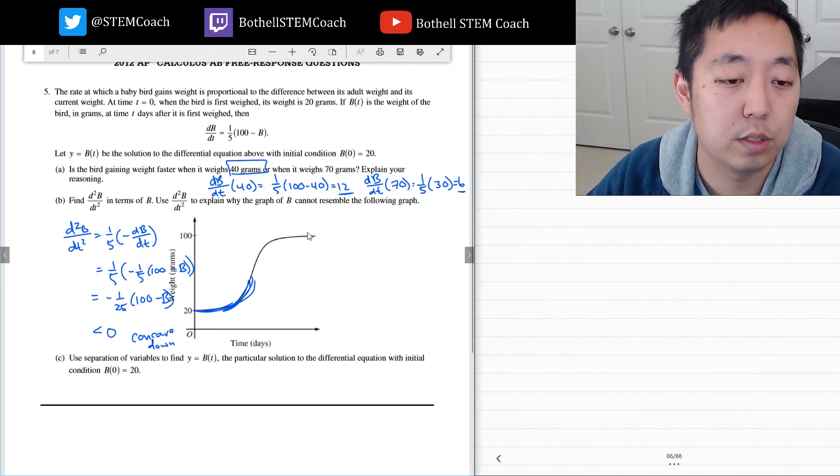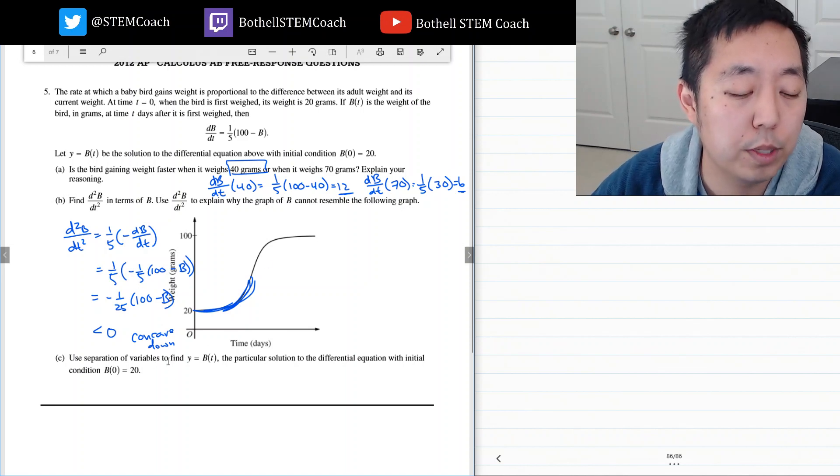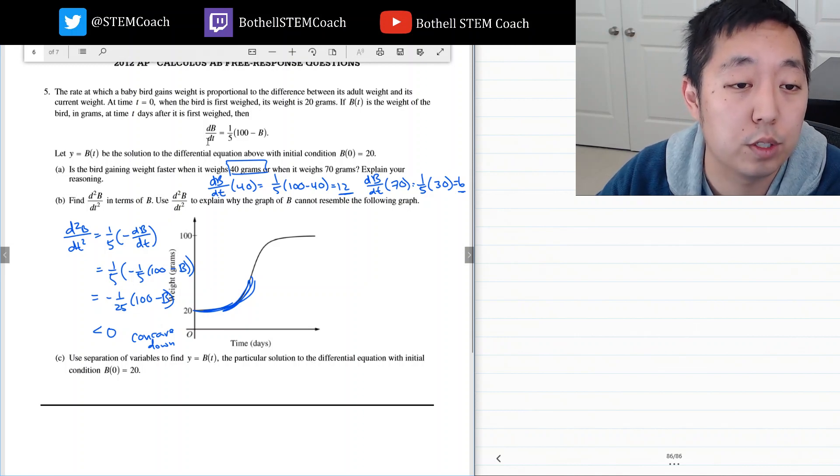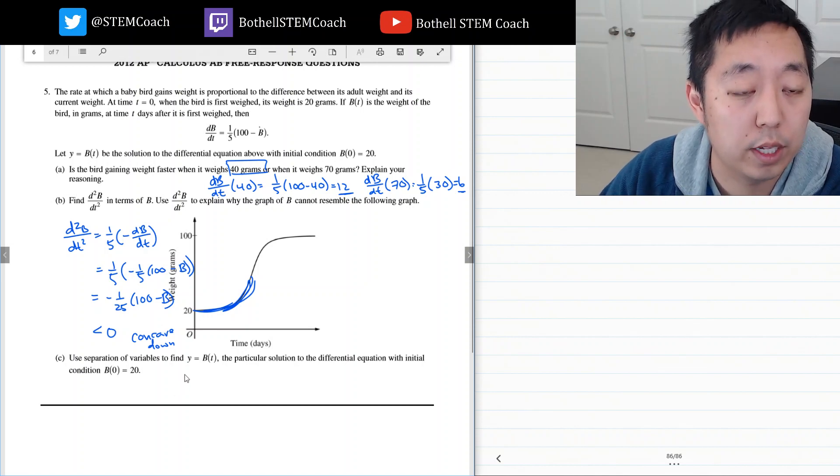Okay, use separation of variables to find b of t, the particular solution to the differential equation. Okay, so to solve this differential equation we do separation of variables. I'll bring the dt up, so I'll just write this repeated down here: db/dt equals one-fifth times 100 minus b.